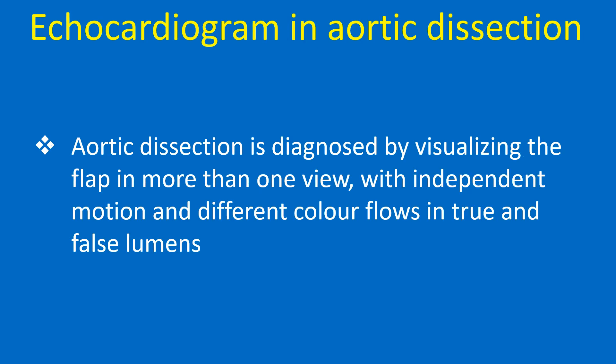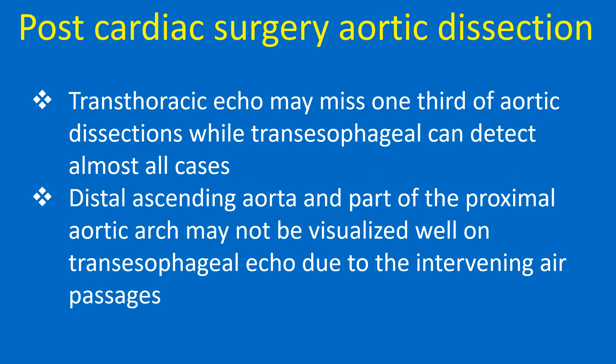On echocardiogram, aortic dissection is diagnosed by visualizing the intimal flap in more than one view with independent motion and different color flows in the true and false lumens. Transthoracic echo may miss one third of aortic dissections, while transesophageal echo can detect almost all cases.